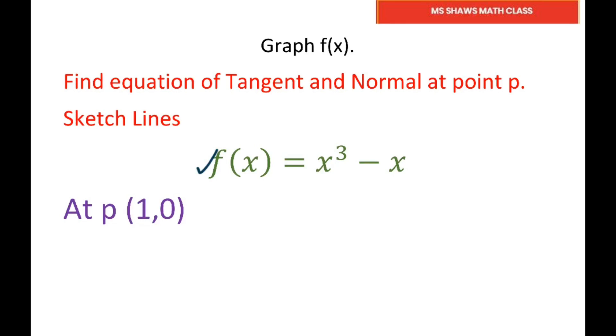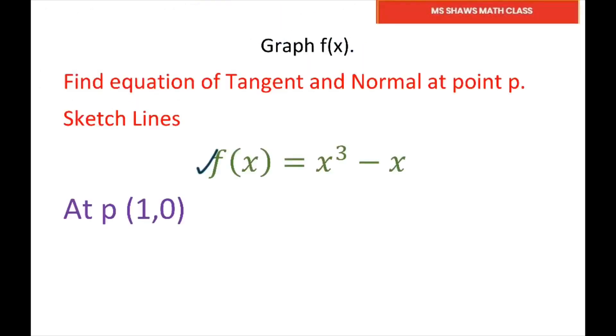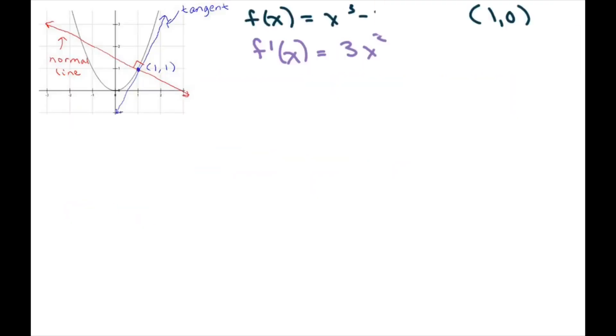And we're going to take the first derivative. So we take the first derivative that's f prime of x and this is going to be 3x squared. So sorry about that. So minus one. Now plug in your one value at your x value of one to find the slope.